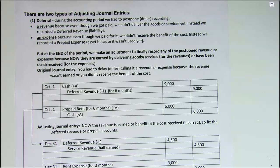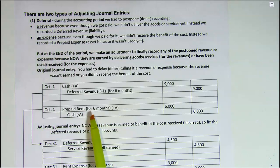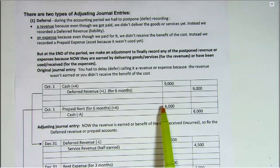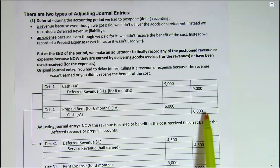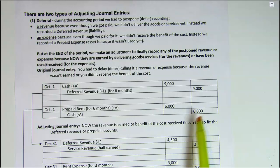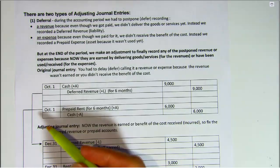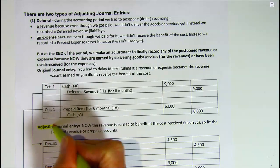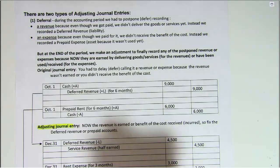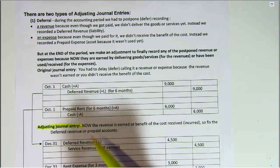In our second situation on October 1st, we paid for rent ahead of time. We haven't even been there a month yet. The six months of rent that we paid out represents an asset — a future benefit. So we debit the asset account prepaid rent to increase it, and we credit to decrease the cash account. That's what we learned in chapter 3. Now in chapter 4, we learned the adjusting journal entry.